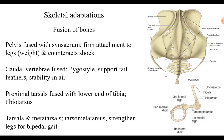The endoskeleton of birds shows three important features: fusion of bones, elimination of bones, and development of new structures in the endoskeleton.